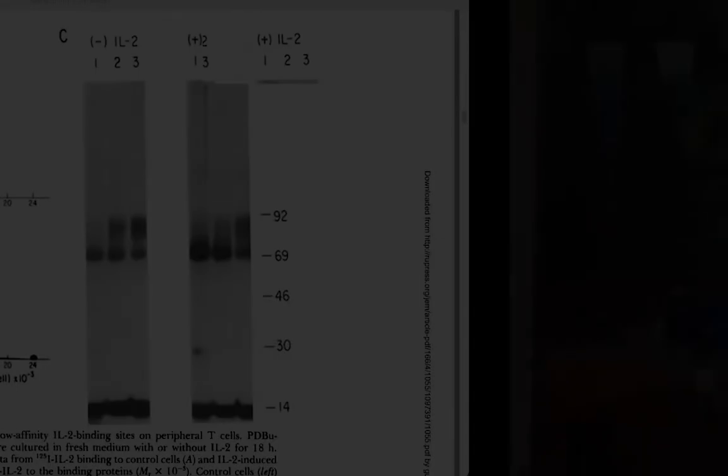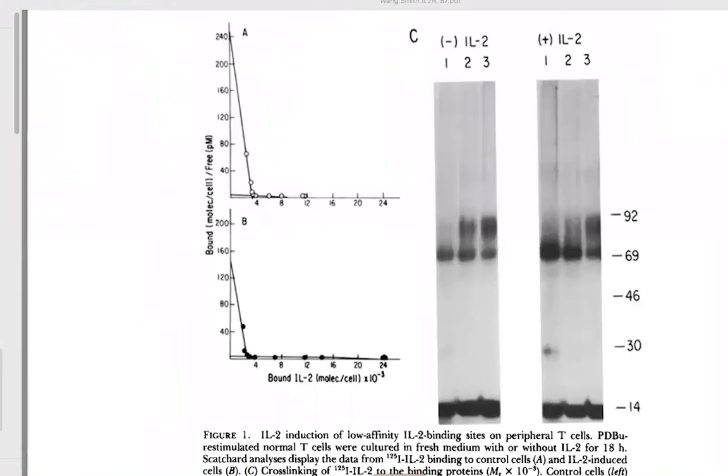We could also calculate the T½ for dissociation, which comes out in seconds, minutes, or hours, giving some idea of what's going on. Those were the techniques. Moving on to the screen sharing — this is Figure 1, which shows the induction of high- and low-affinity binding sites on peripheral T cells. In panel A, we show binding of radiolabeled IL-2 to peripheral T cells activated through the T cell receptor.